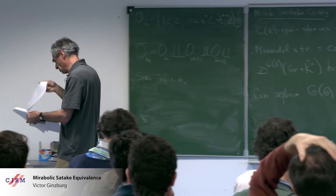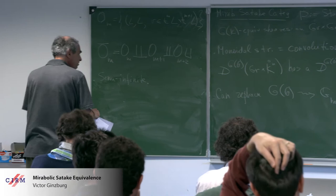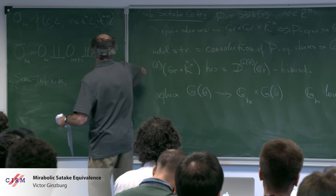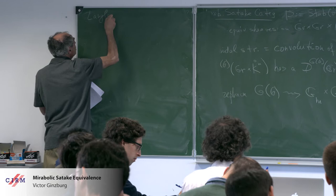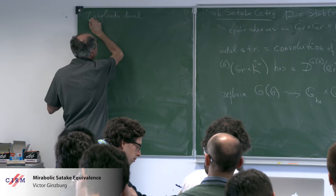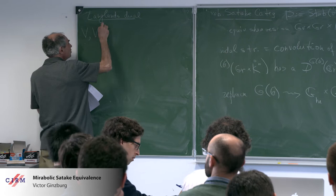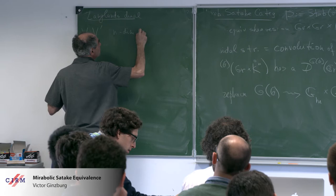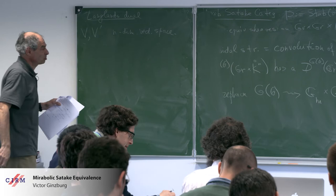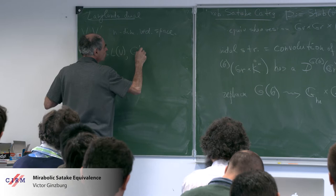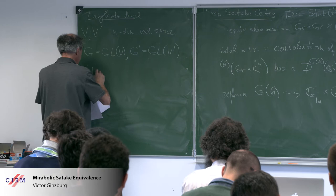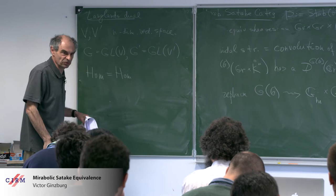This is the constructible side of the Satake. Now I go to the Langlands dual side, and the theorem will say the two sides are equivalent. For this, we fix two N-dimensional vector spaces. There are no formal power series or anything on the Langlands dual side.